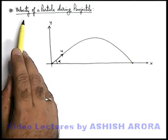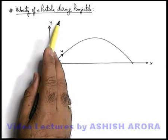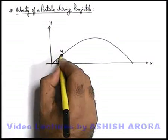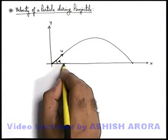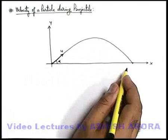Now we are going to study the velocity of a particle during projectile motion. Say if a particle is thrown with the initial velocity u, which is at an angle alpha with the horizontal, it follows the projectile trajectory.